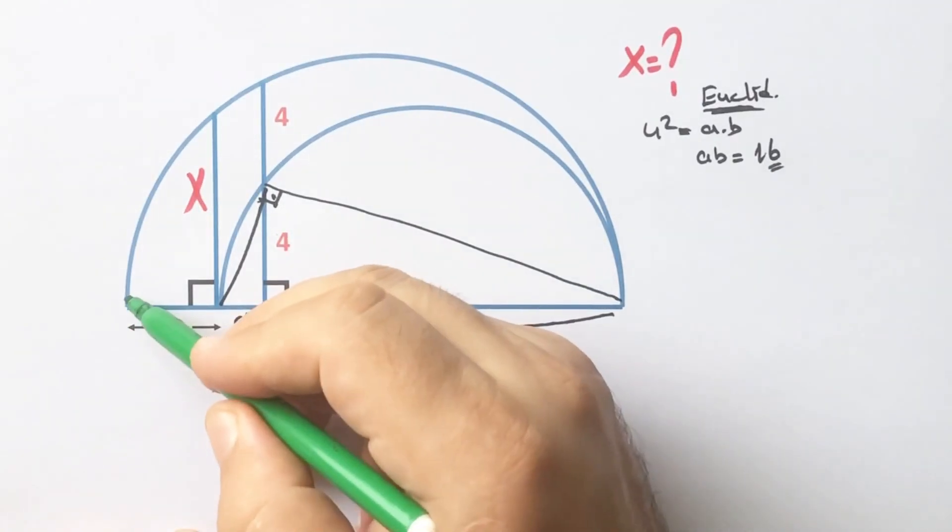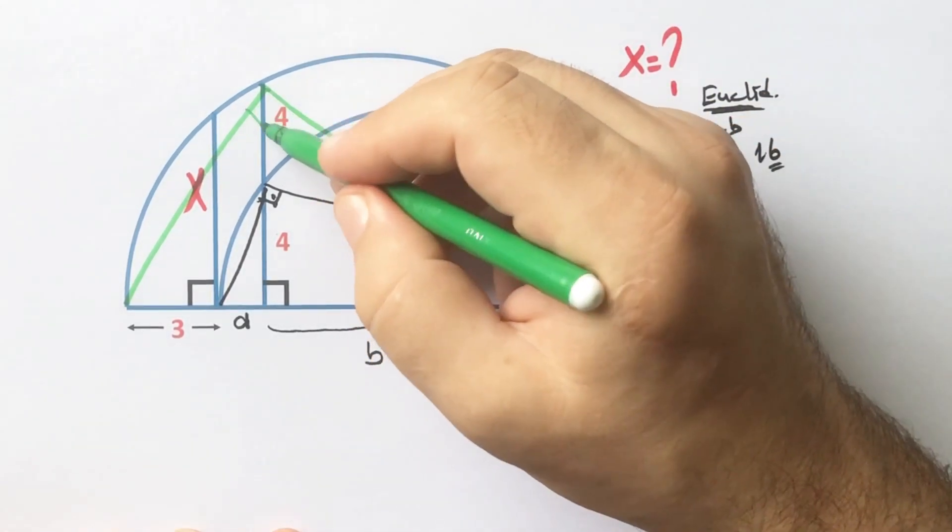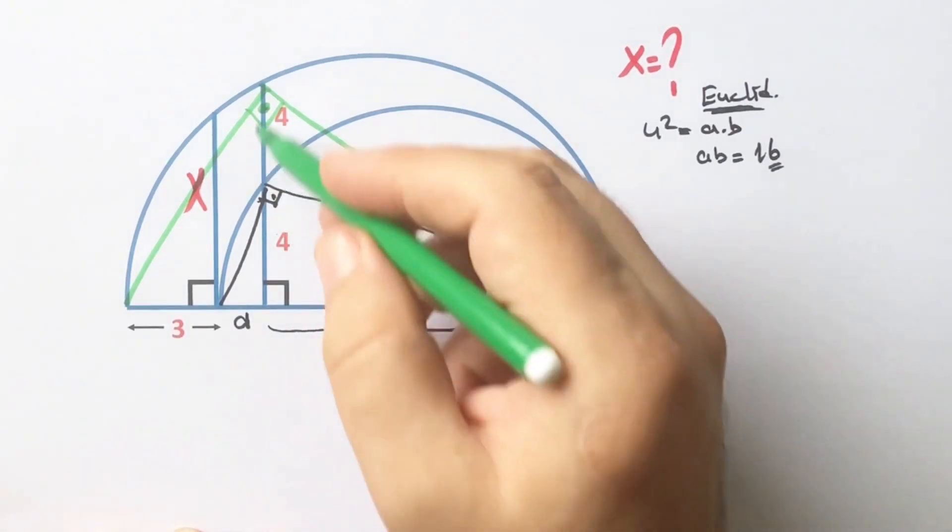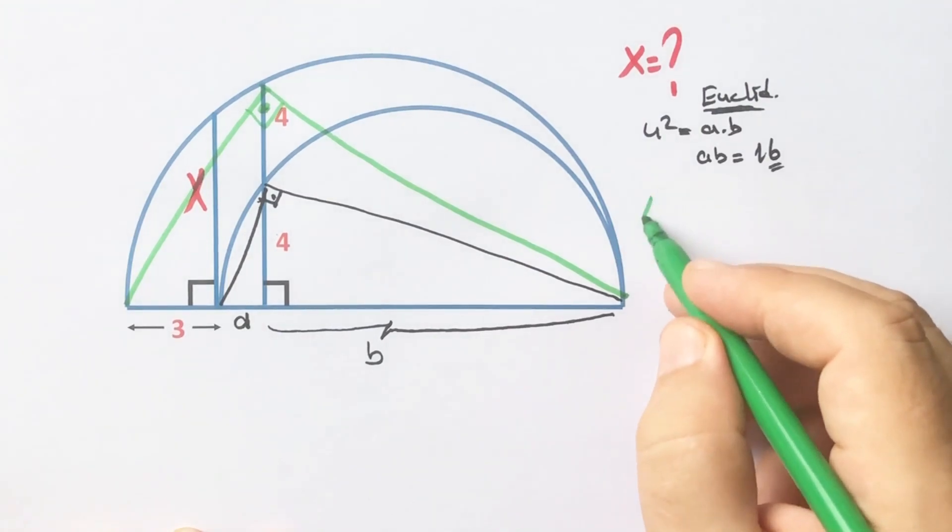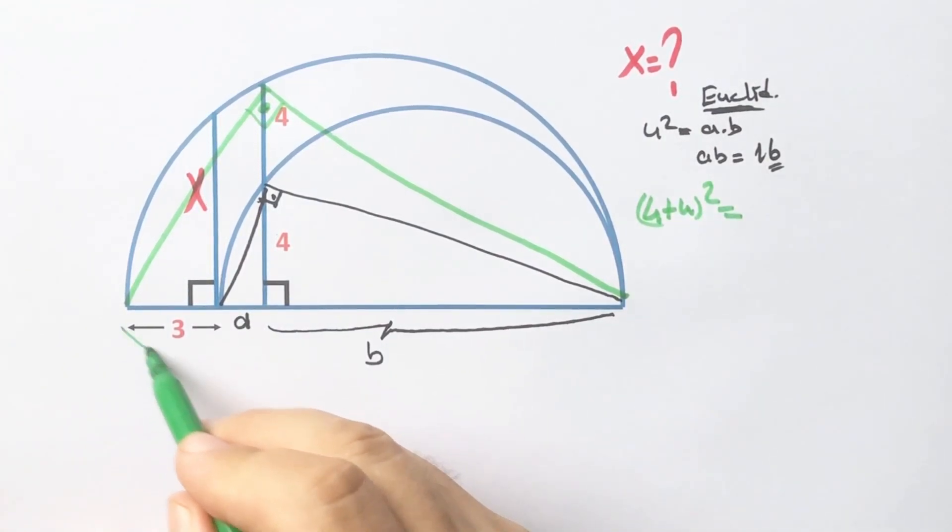Likewise, if we connect here, this is also 90 degrees because it's opposite of the diameter. And then, the square of this length must equal this part.